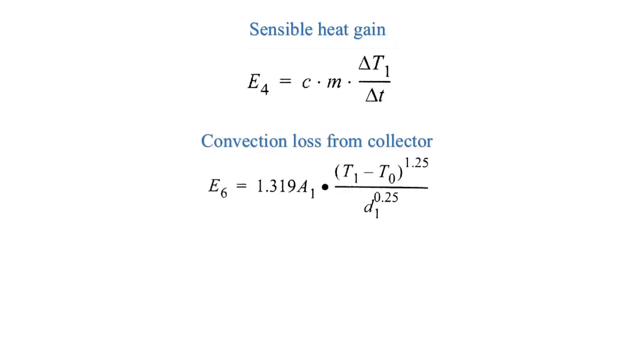The convection loss from collector is given by the following formula, where A1 is the effective surface area of the collector including one end, T1 is the collector's temperature, T0 is the shade temperature, and D1 is the diameter.